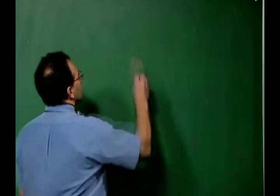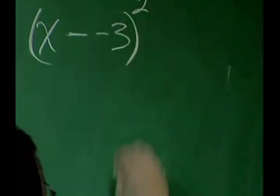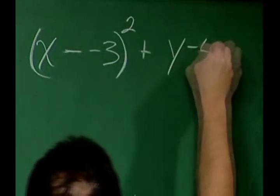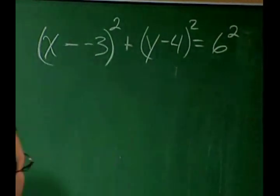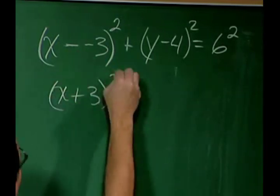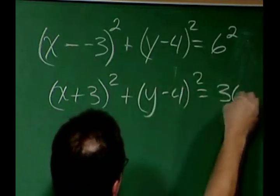So what we know is that we have a circle with the center of (-3, 4) and a radius of six. So that equation would look like this: (x - (-3))² + (y - 4)² = 6². Simplify that just a little bit. This becomes (x + 3)² + (y - 4)² = 36.